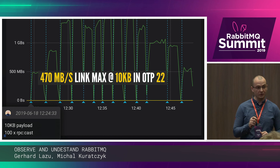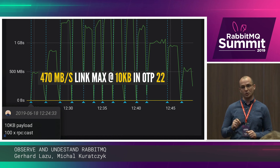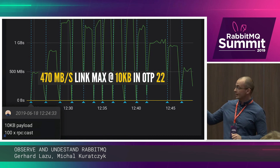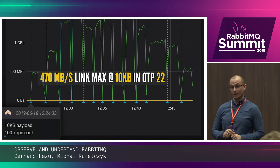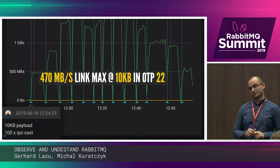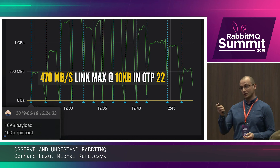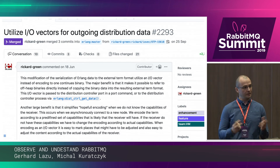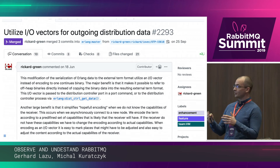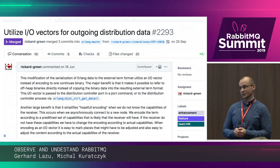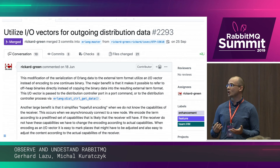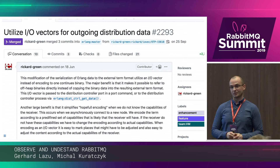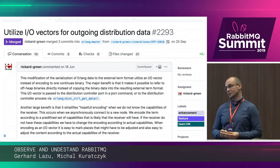The reason why this matters is that there is an absolute limit that a single Erlang distribution link can push. For 10 kilobyte payloads, this limit is 470 megabytes per second on OTP 22 — and if you're using a previous version, it won't be better. We showed that graph to the OTP team and told them what we'd discovered. They said they knew there was a problem but didn't expect people to hit this limit — it's basically about how much data gets copied around and the fact that the copying is not as efficient as it could be. Six hours later, Rickard Green did a PR which improves this. So that one graph helped the OTP team improve certain things in Erlang OTP itself — the distribution and how data is copied and transferred — and this limit is now higher.